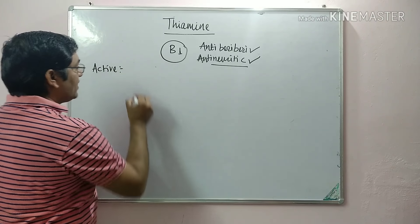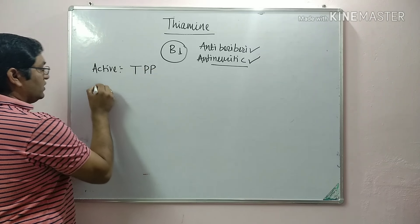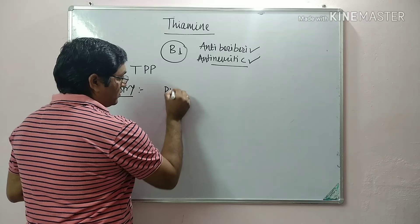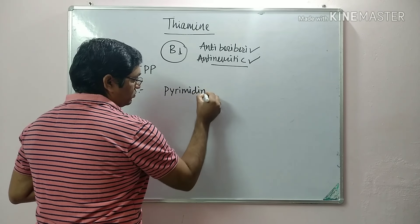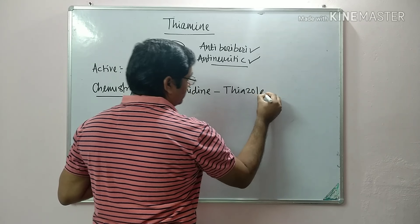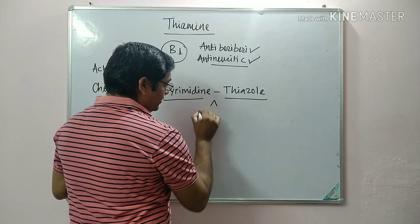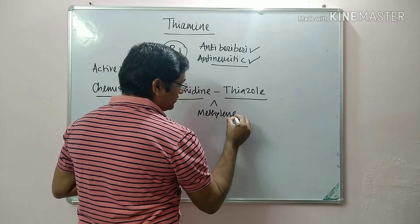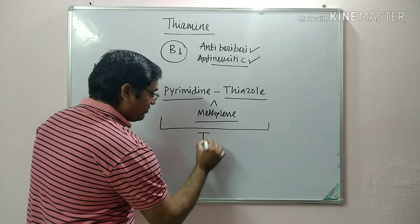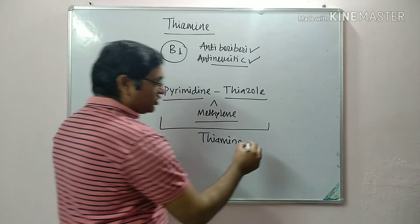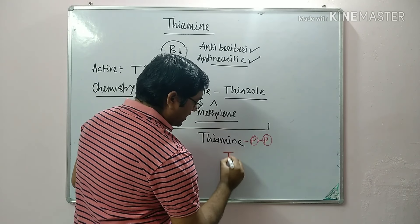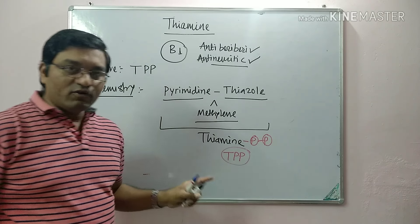The active form of thiamine, or coenzyme of thiamine, is Thiamine Pyrophosphate (TPP). Chemically, it consists of a pyrimidine ring attached to a thiazol ring, connected by a methylene bridge. This structure — pyrimidine plus thiazol — is known as thiamine, and with the addition of two phosphate groups it becomes Thiamine Pyrophosphate, the active form of thiamine.